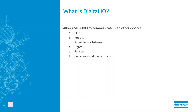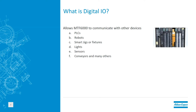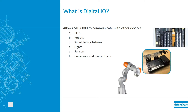So what is digital I/O? Basically, digital I/O allows the MTF-6000 to communicate with other devices. These other devices could be things such as PLCs, robots, smart jigs or fixtures, lights, sensors, conveyors, and many other things.